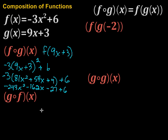Again I can do a little bit more simplification here. We have negative 243x squared minus 162x and then minus 27 plus 6 would be minus 21. So there's our f of g of x. So this function right here would do what both of these do together.